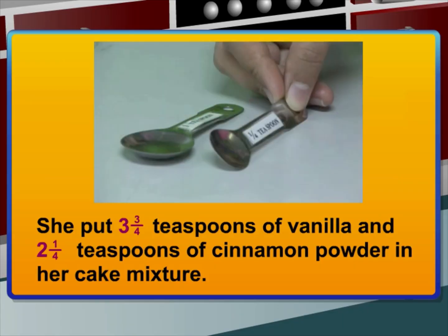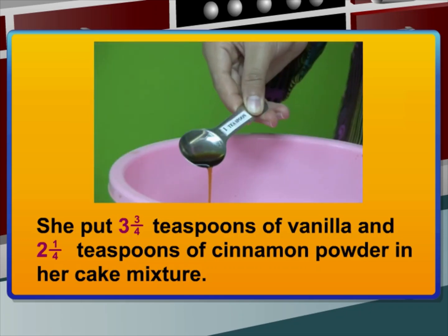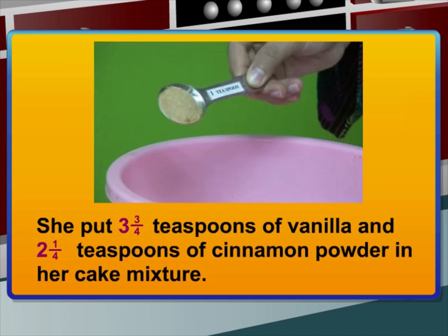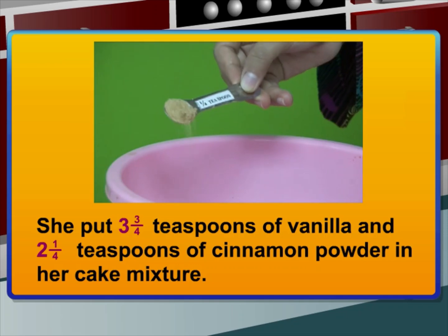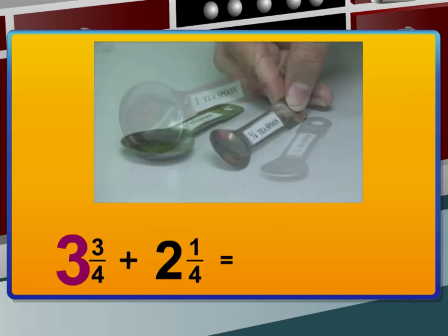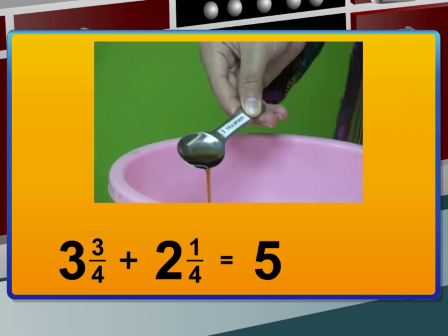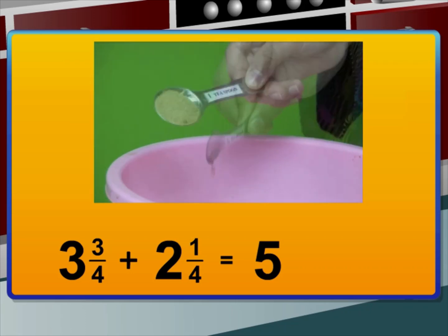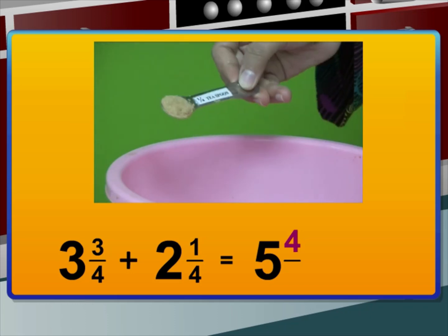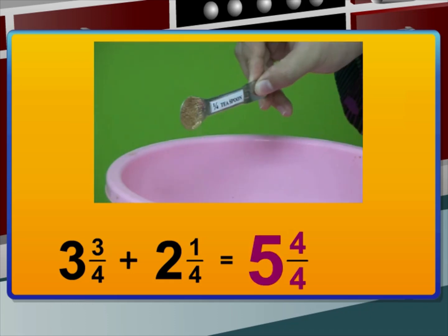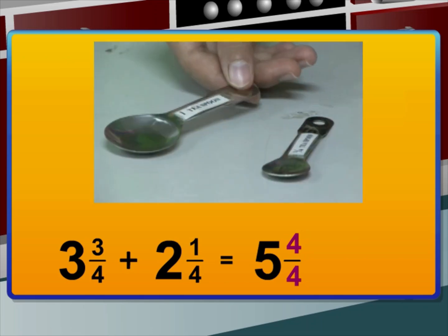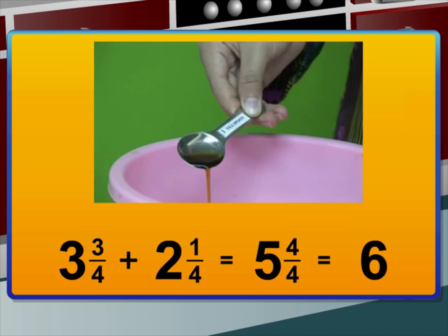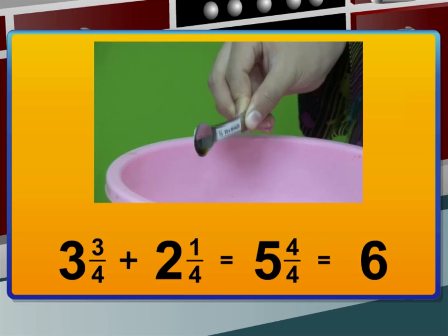Last Sunday, Narmada made a cake. She put three and three quarters of teaspoons of vanilla essence and two and one quarter of teaspoons of cinnamon powder in her cake mixture. First we add the whole numbers: three plus two is five. Then we add the fractions. Since the fractions have the same denominator, we just add the numerators. Three plus one gives four, and we keep the same denominator of four, giving five and four over four. Four over four is one whole, so five plus another one equals six. Narmada used six teaspoons of ingredients in the cake mixture.